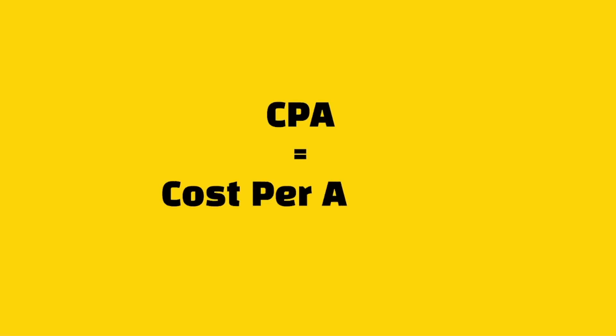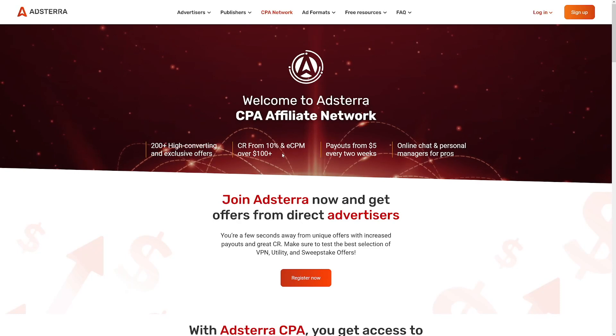Remember that action that we talked about earlier? This is where it gets a bit hard because you can choose the action. But a lot of people are just choosing hard actions — for example, if someone enters their credit card information, they get paid for it. Don't use those, please. They can promise you $20 or $30 per lead, but it's just too hard to get someone to enter their credit card information on an unknown website compared to just getting an email.